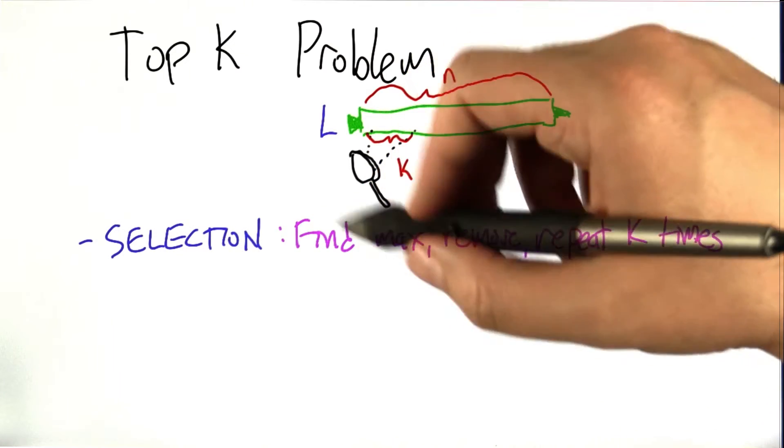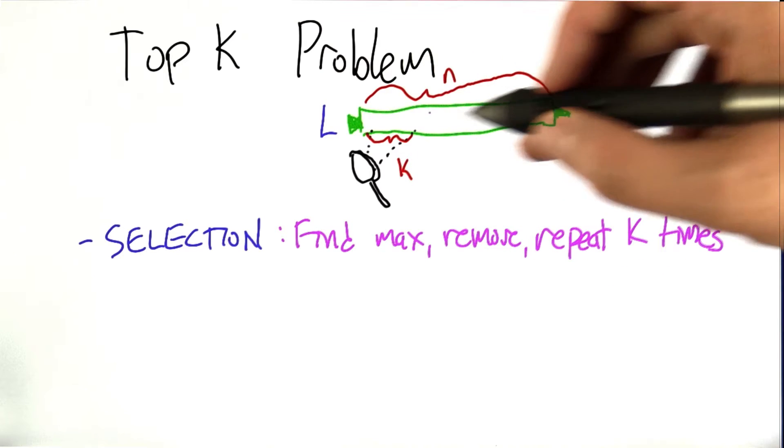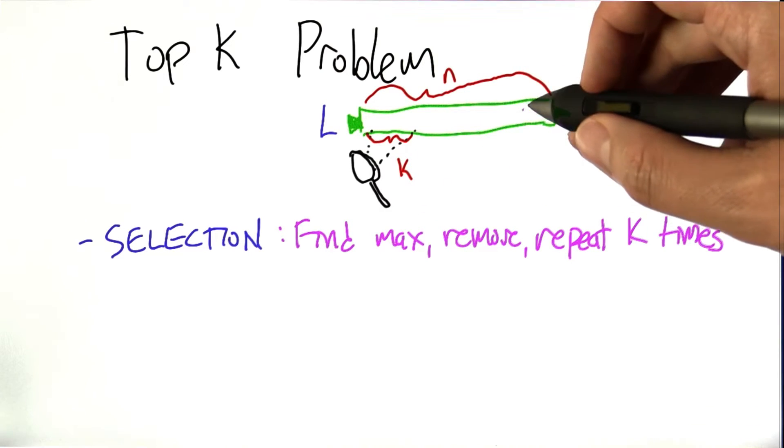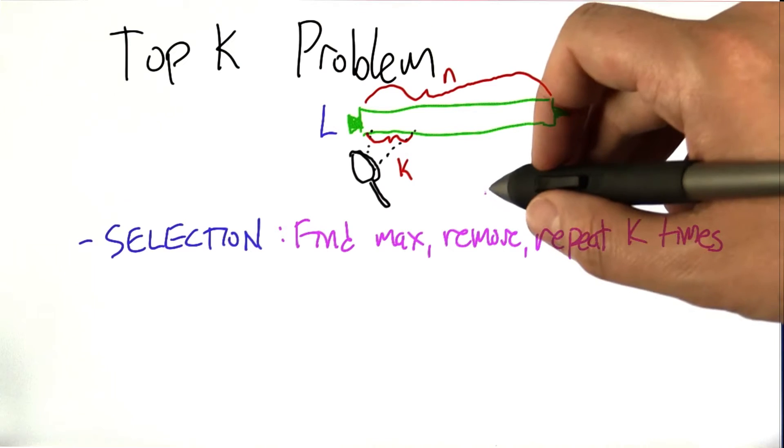So one natural strategy is to iterate the max procedure. So go through the list, find the max, pull it out of the list so the list is now n-1 long, and then repeat this.